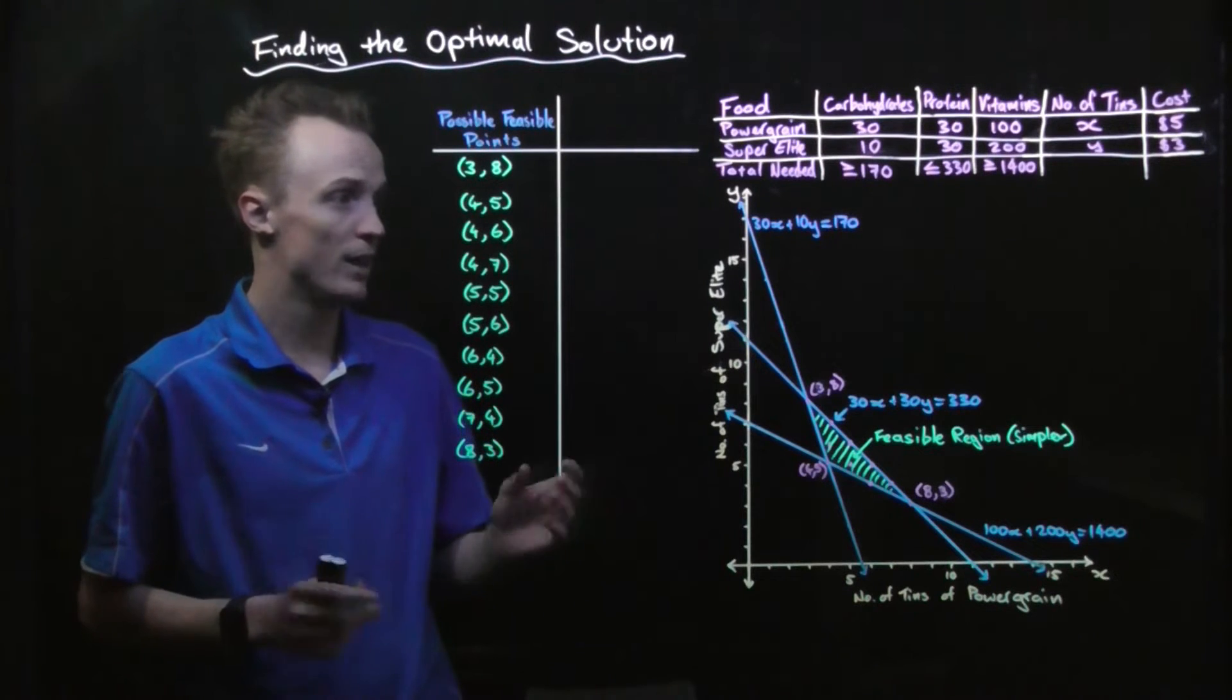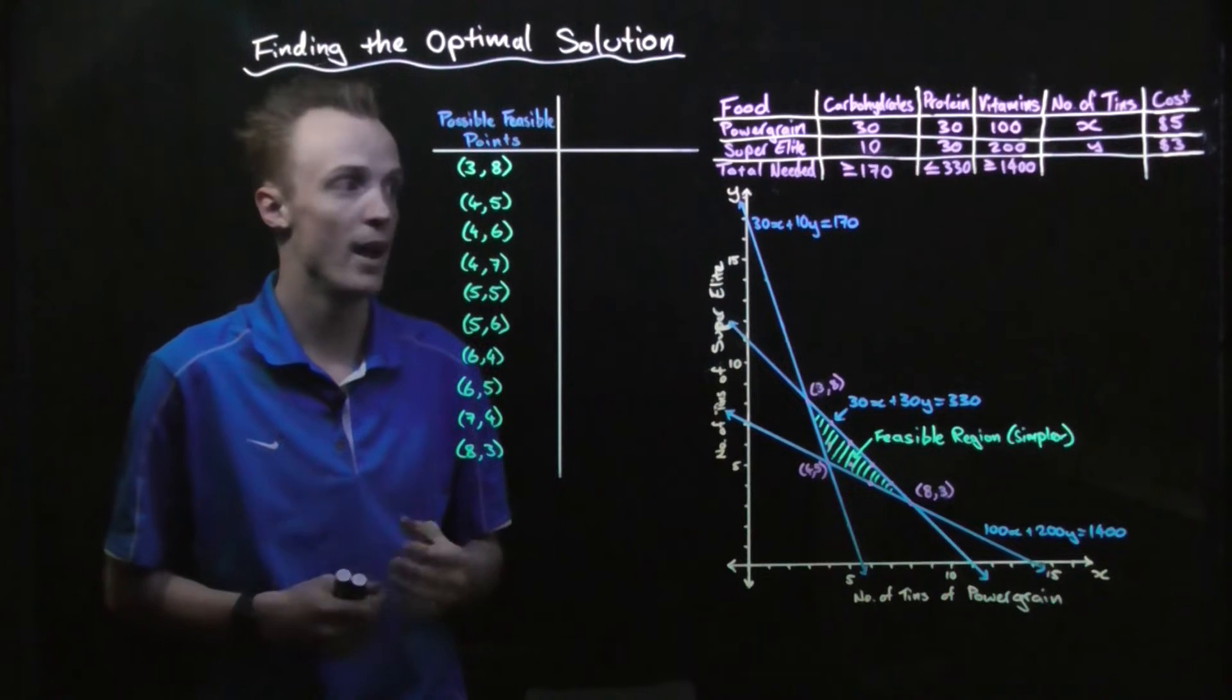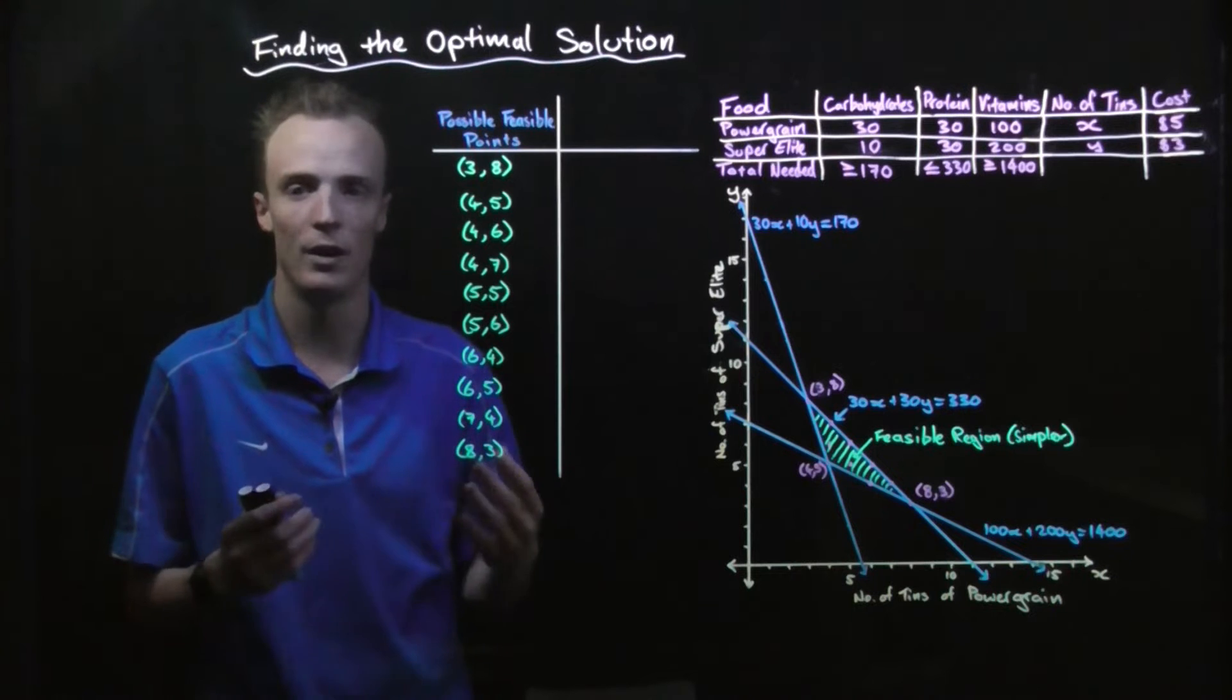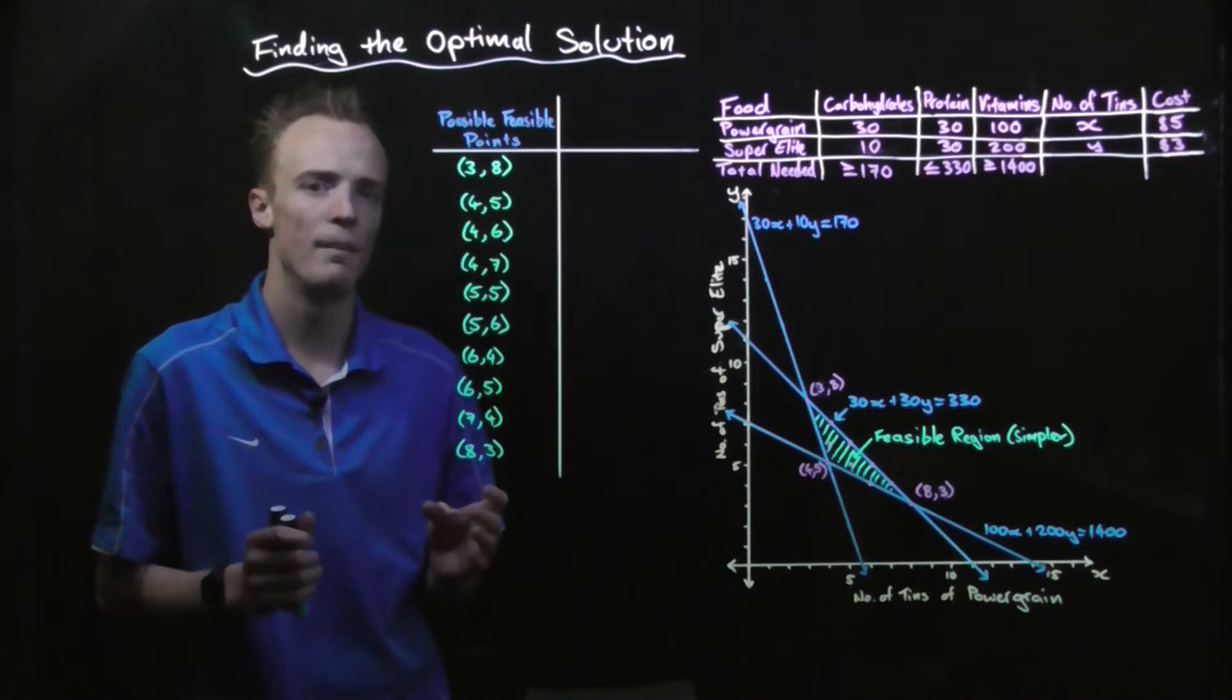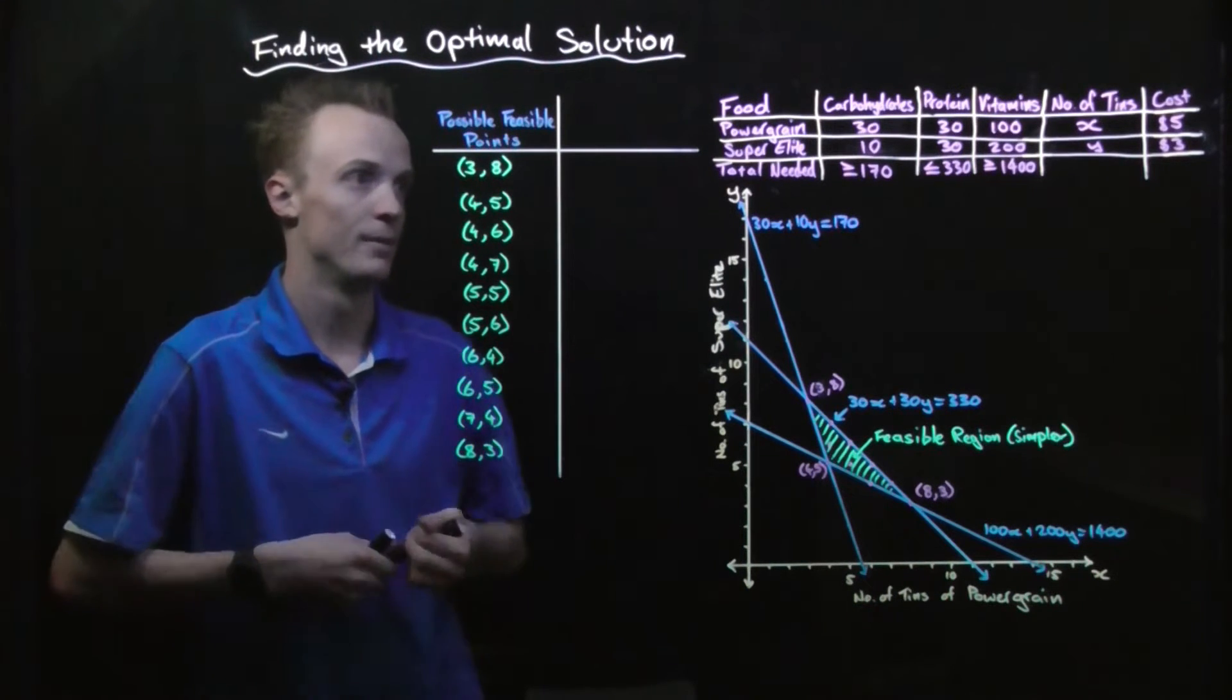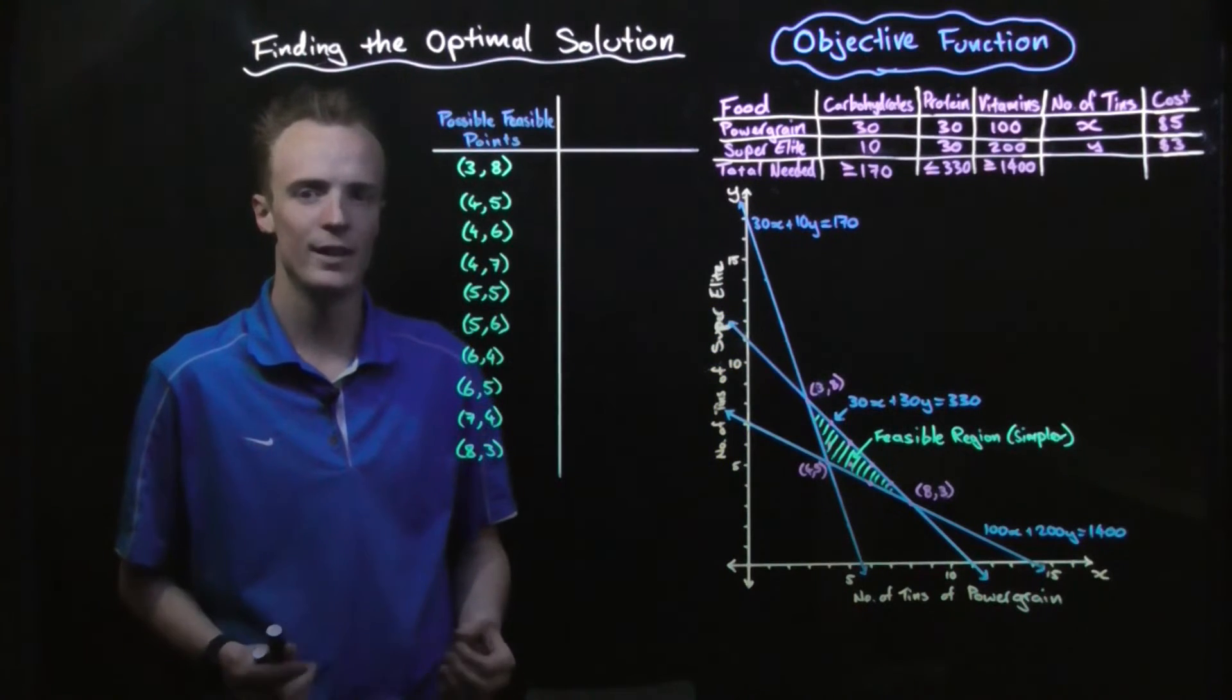Something I've added since last time was a cost for the power grain and the super elite. The power grain costs five dollars per tin and the super elite costs three dollars per tin. To find the optimal solution, the very first step that we need to do is to find the objective function.